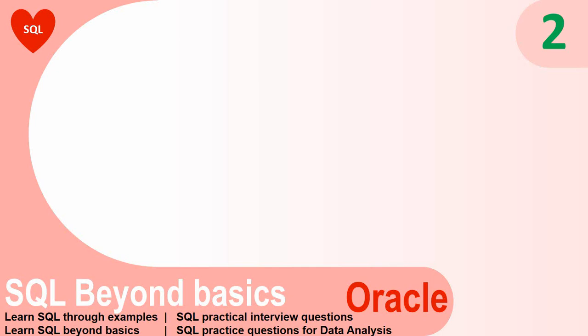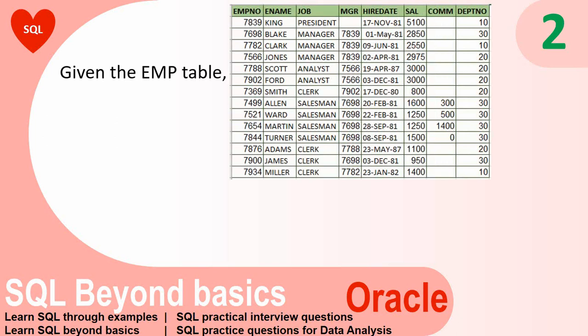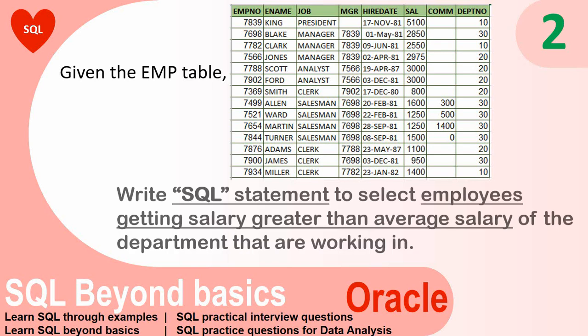Hello friends, welcome to SQL practical question series. In this video, we are going to learn about another SQL question. This is a very interesting question because we are going to write four different types of SQL for the same problem. Given the employee table, you need to write a select statement to fetch the list of employees who are getting a salary more than the average salary of the department where they are working.